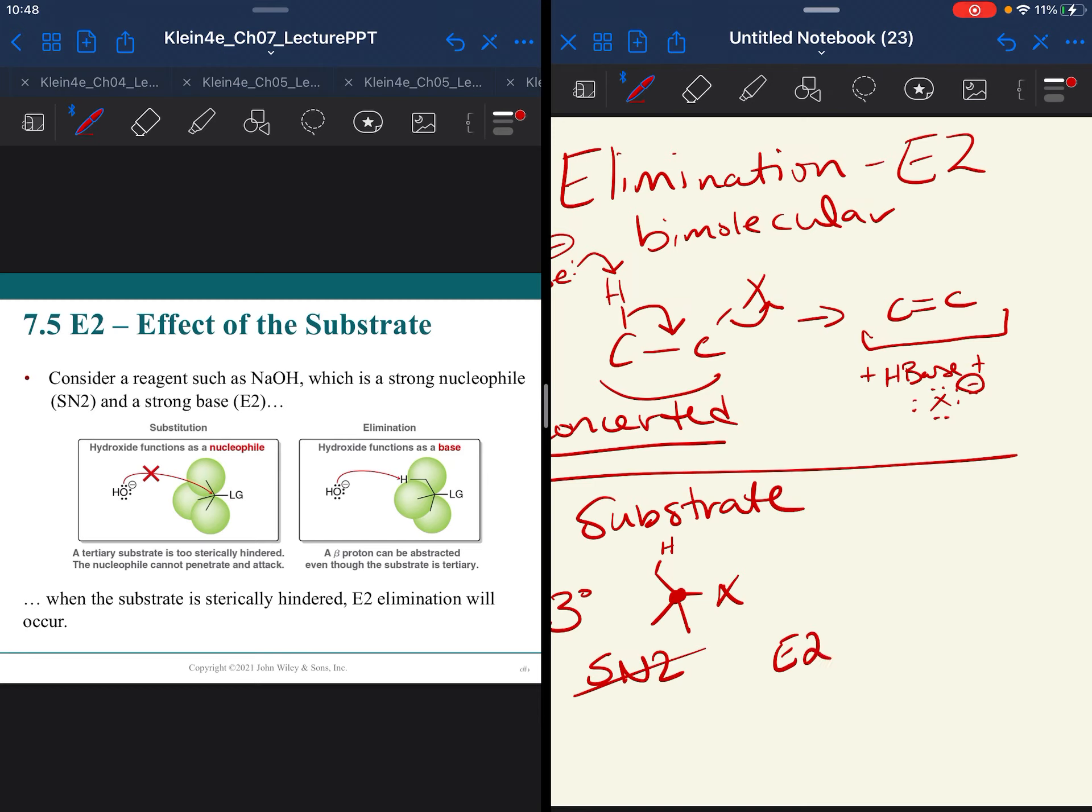So E2 is available. When our hydroxide ion couldn't get to our electrophilic carbon, it could act as a base and do E2 instead. So those hindered substrates are going to prefer elimination,